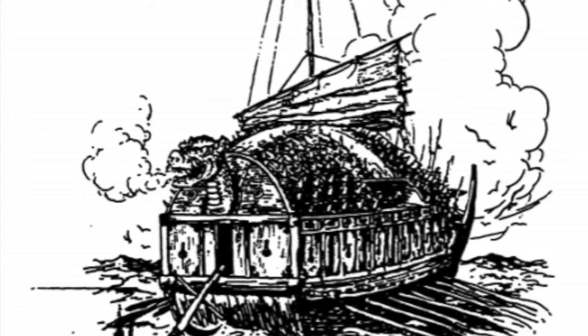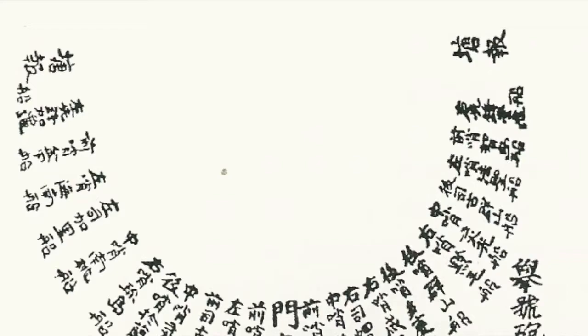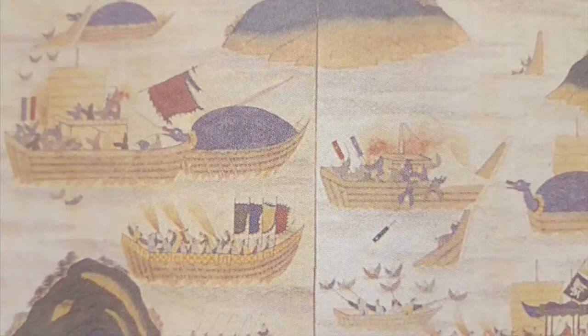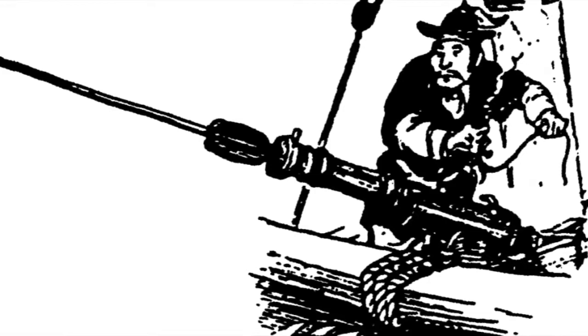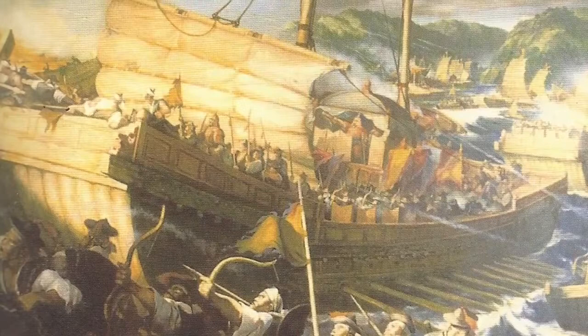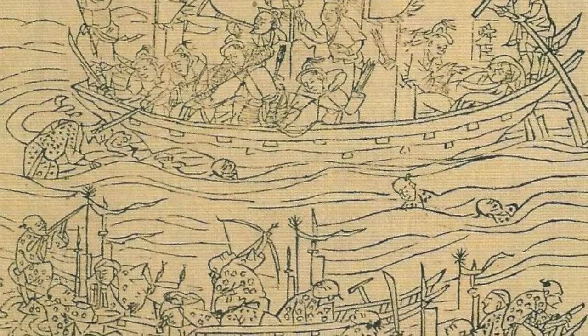Yi combined his superior ships with effective tactics. Specifically, he would send the turtle ships to lead the attacks, close in on the Japanese fleet, and wreak havoc among it. This provided an opportunity for the main contingent to keep distance and send volleys of cannonballs and arrows into the Japanese ships. In doing so, Yi succeeded in ten separate naval battles in the first year of the invasion, using his fleet of 85 ships to sink hundreds of Japanese ships while keeping Korean losses minimal.